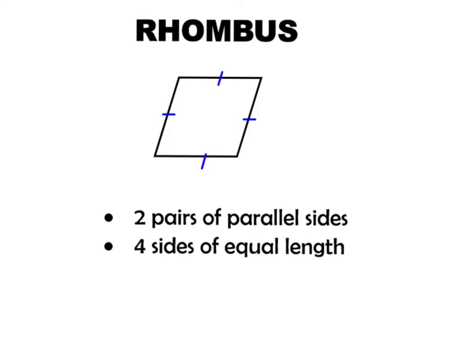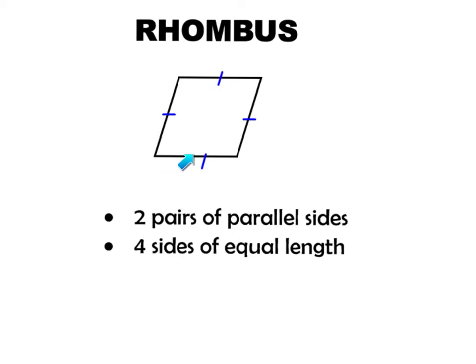The third term is called a rhombus. A rhombus has two pairs of parallel sides just like a parallelogram, but all four sides are of equal length. These two sides are parallel and will never cross, and these two sides are also parallel. However, all four sides are equal length, as shown by the markings here. We call this a rhombus because it has two pairs of parallel sides and four sides of equal length. Make sure you write these two facts down — you may need to pause the video.